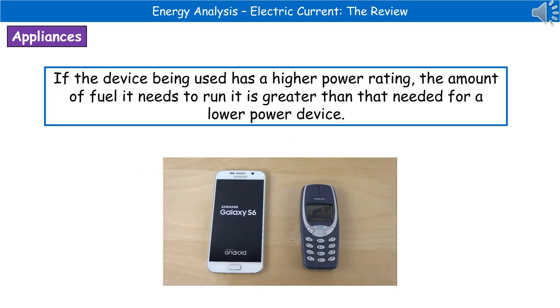If the device you're using has a higher power rating, then that means it's going to need a greater amount of fuel to run than a lower powered device would.